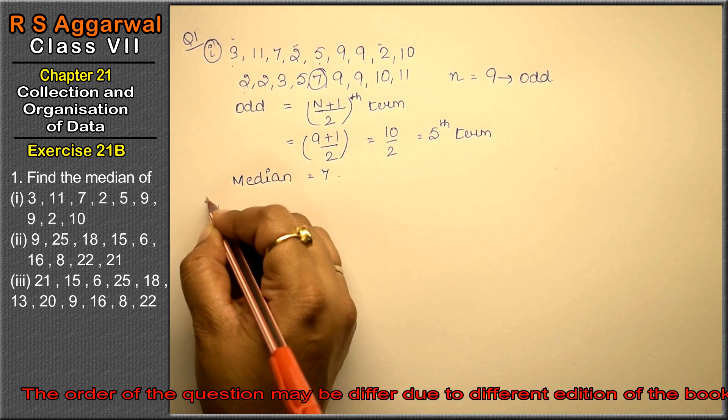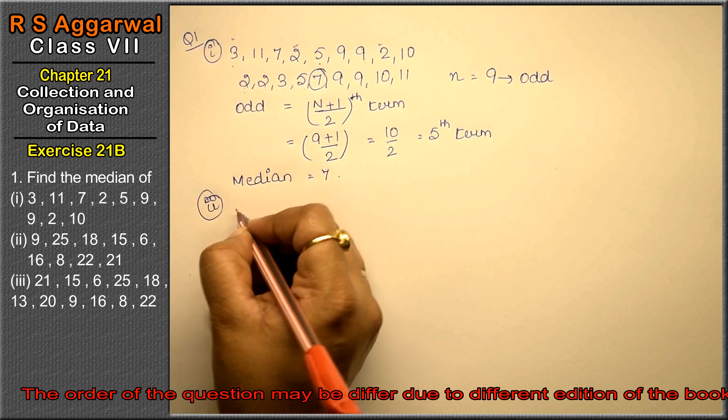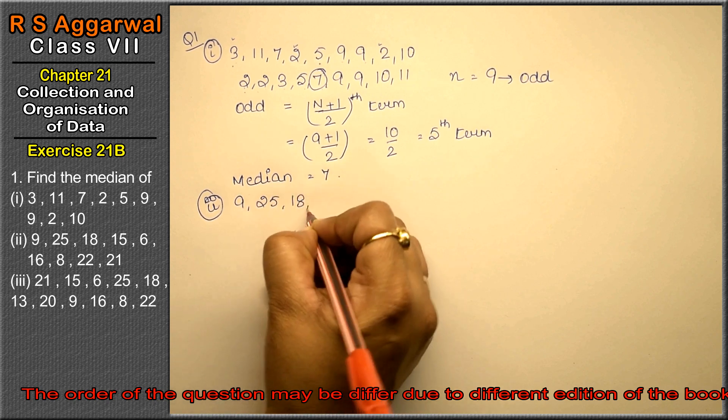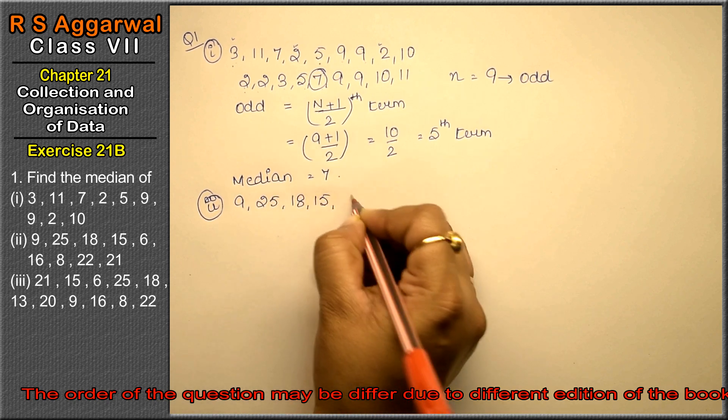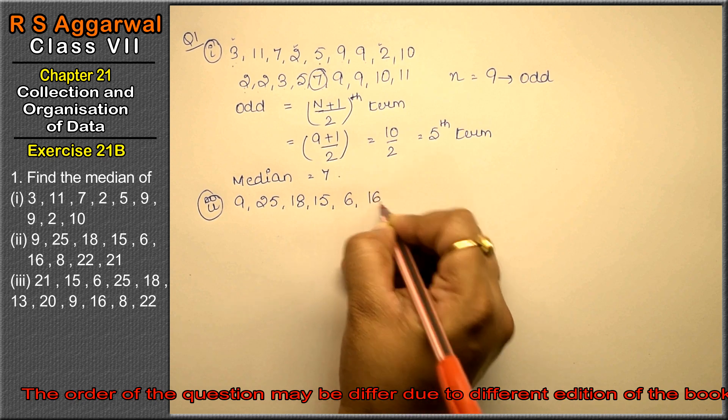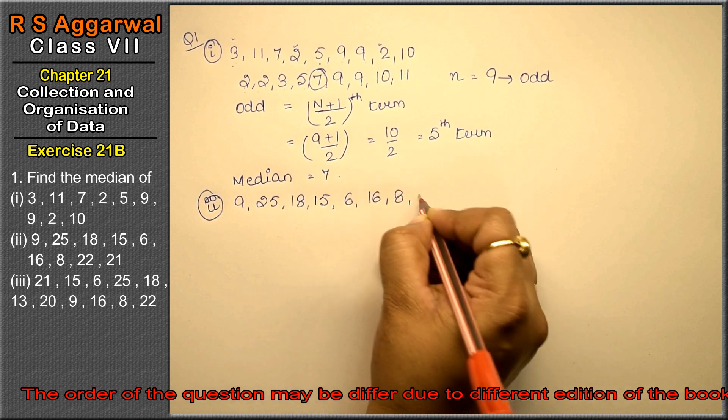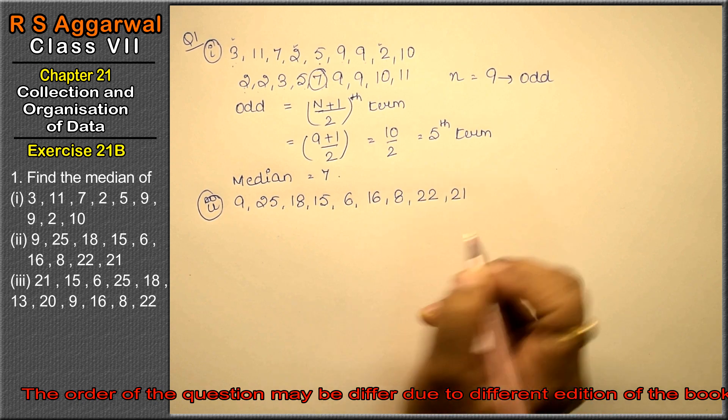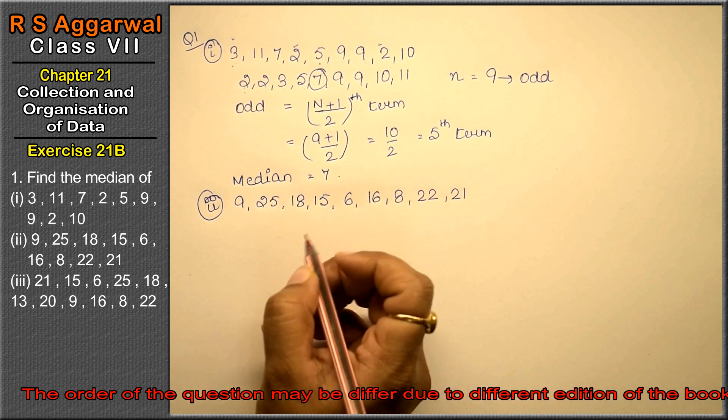Let's do second part. How many numbers? 9, 25, 18, 15, 6, 16, 8, 22, and 21. This is the raw data. Now we will do this in ascending order.